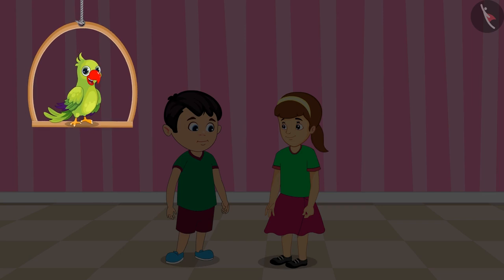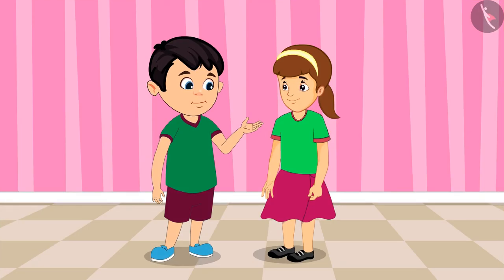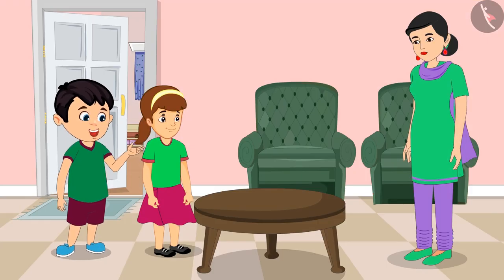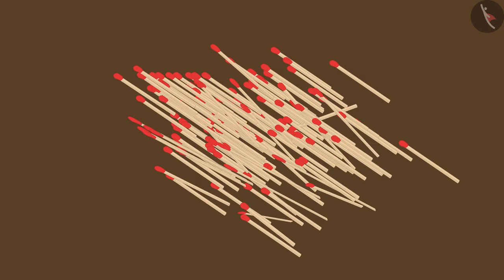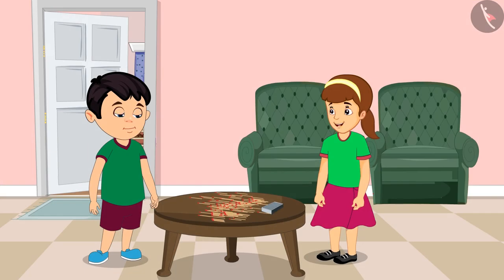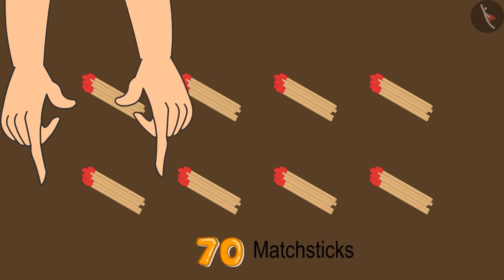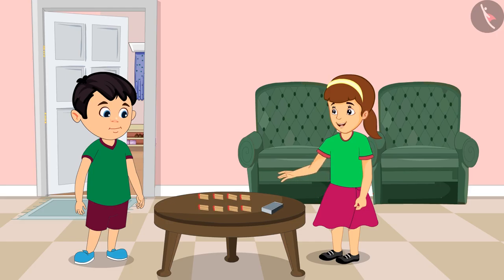Chotu and Arti are thinking of making a model today with matchsticks. Arti says: We will need 70 matchsticks for the model. They ask Mummy for matchsticks, and she gives them a pile. Arti says: These are too many matchsticks — let us take 70 out of this pile. Please make bundles of 10 each so that counting becomes easier.